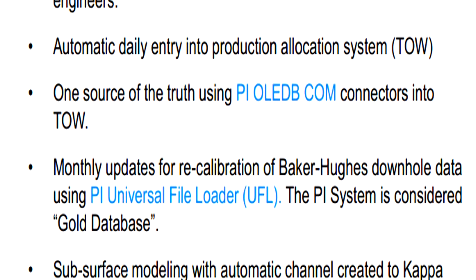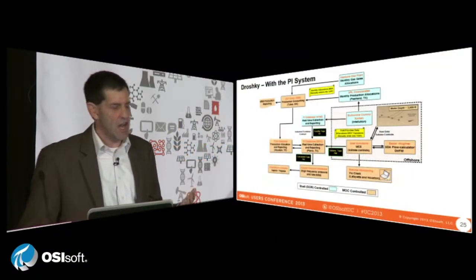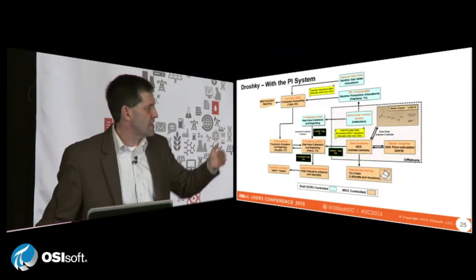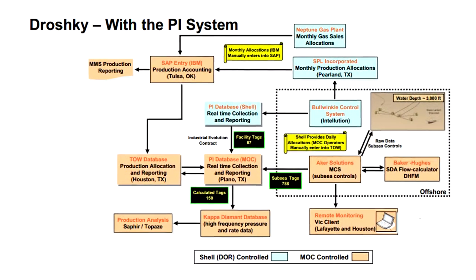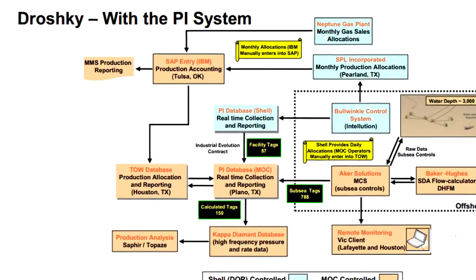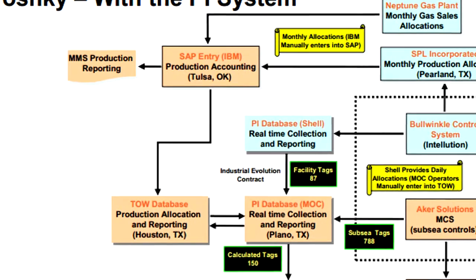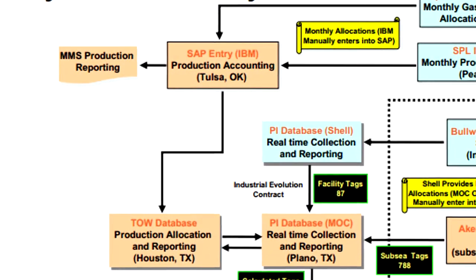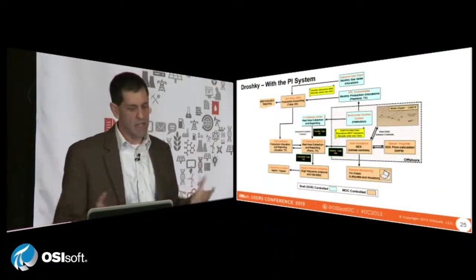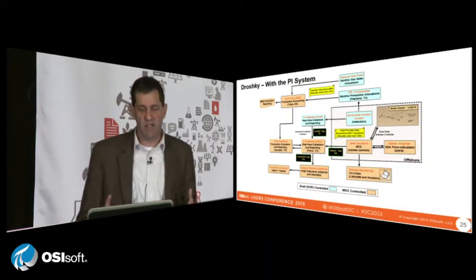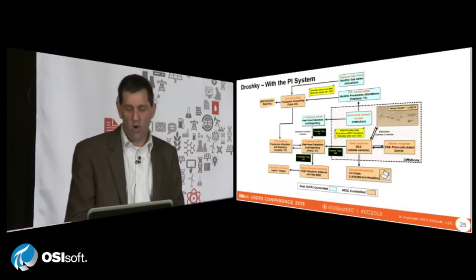One source of truth using the pioladb.com connector — we calculate 150 tags and send them to our modeling packages. Up on the upper left, we've got data entry going into SAP automatically through our tow production allocation system. We have a completely integrated system where Pi is at the center of it all, considered the gold standard.